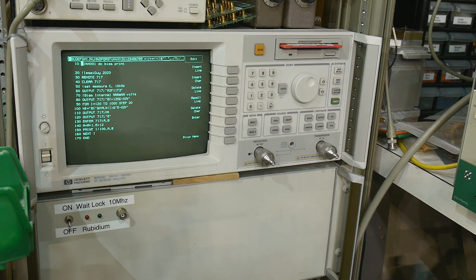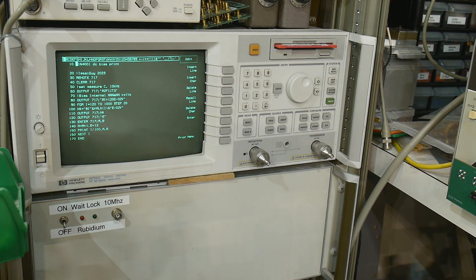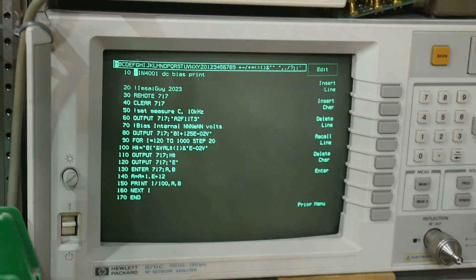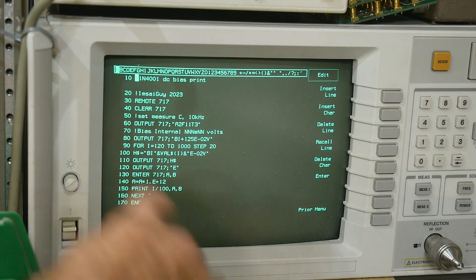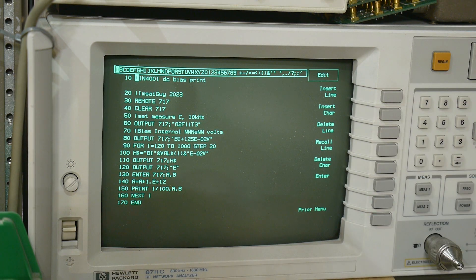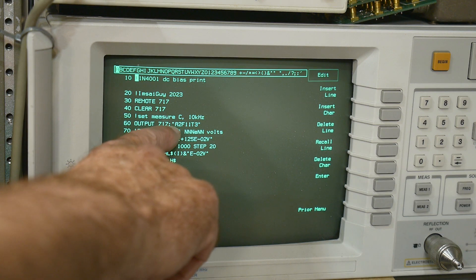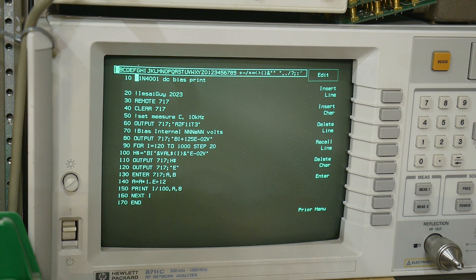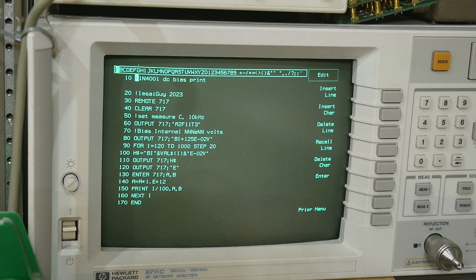So this is the program. Let's see here. Let me put this down. Can you see that? There we go. So we're going to talk to 717, which is the LCR meter. We're going to clear it. We're going to output A2, which is major capacitance, F111, which is 10 kilohertz, and T3, which is manual triggering.